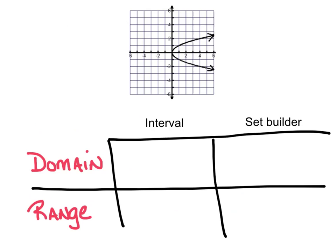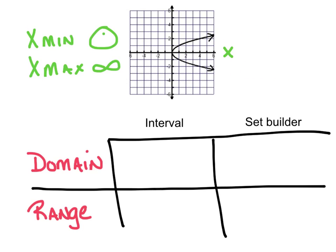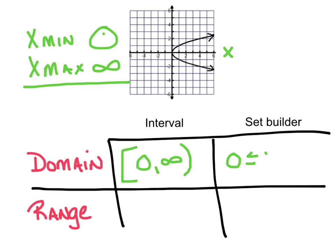Now it's your turn to practice — pause it, see what you get. We're going to go in interval and set builder notation for domain and range. Looking at x min and x max for domain: the smallest number on the x-axis is 0, and the graph goes forever to the right, so that means infinity. In interval notation: 0 comma infinity. At 0 there's no open hole, so it's closed — bracket. Infinity gets a parenthesis: [0, +∞). In set builder: 0 is less than or equal to x, or all x values greater than or equal to 0.